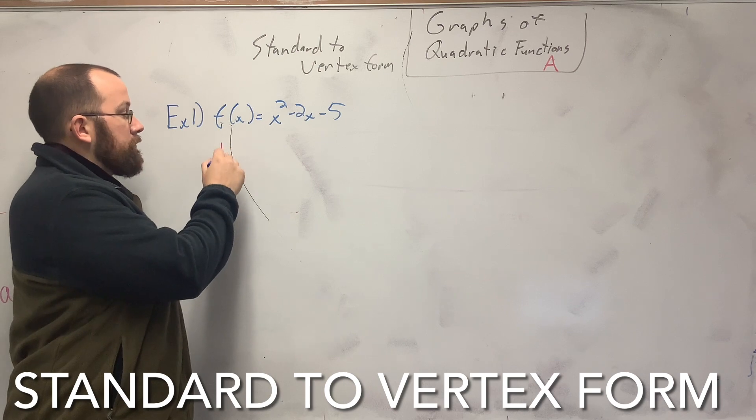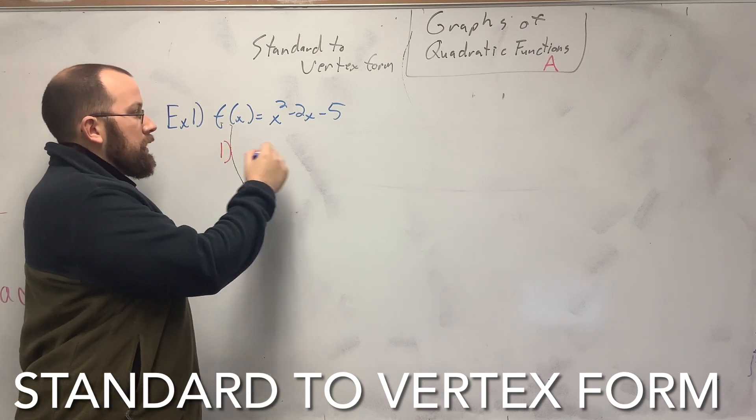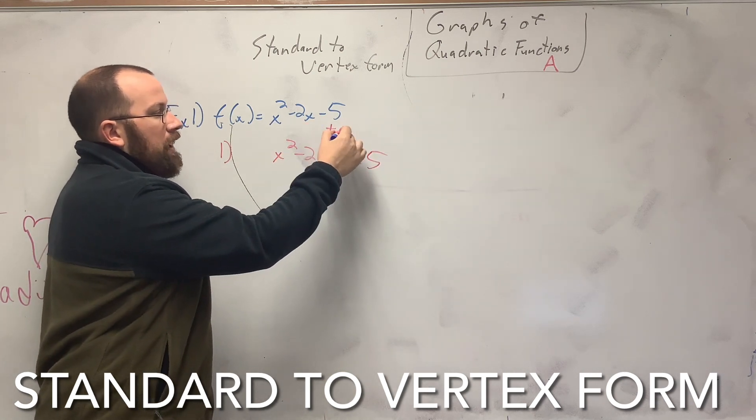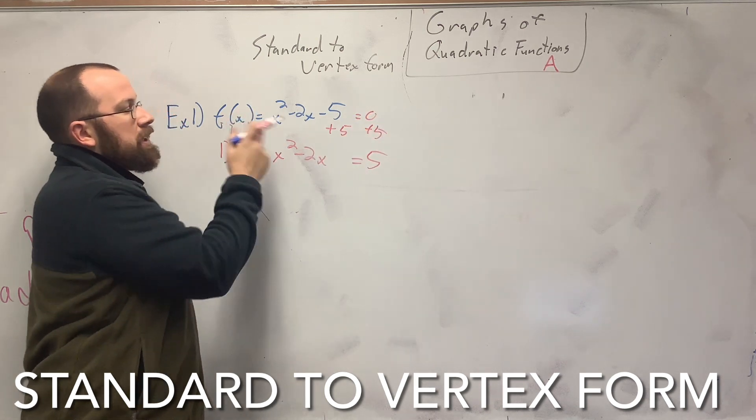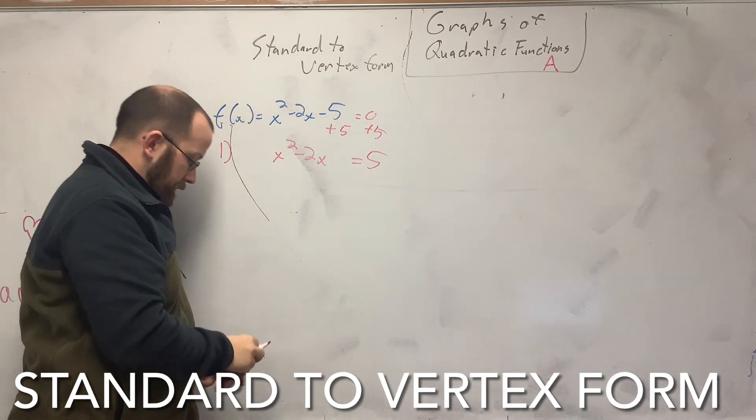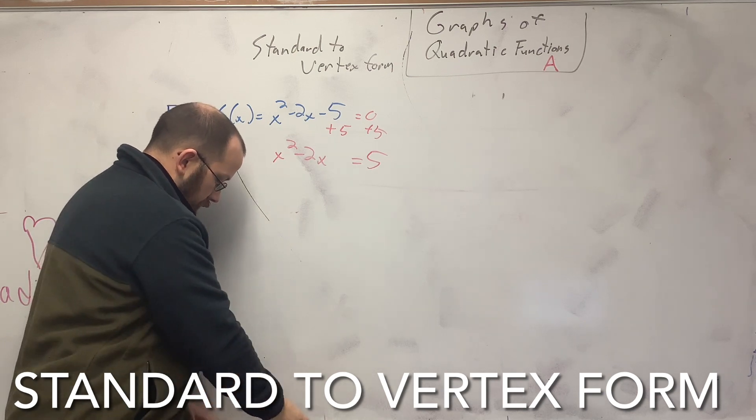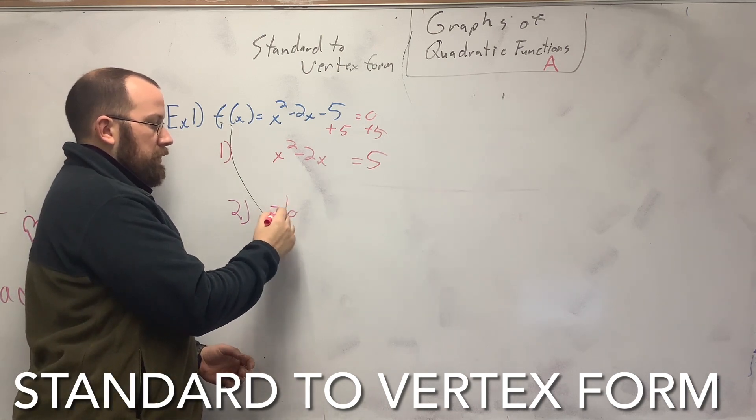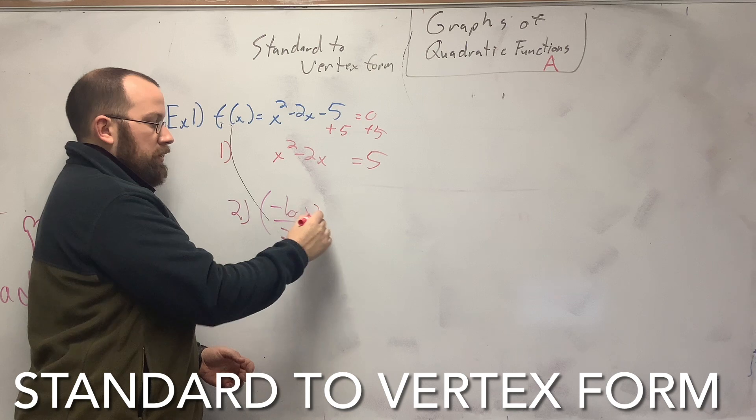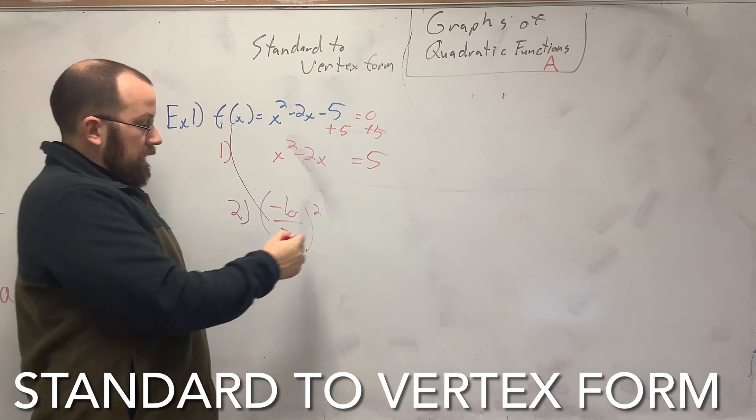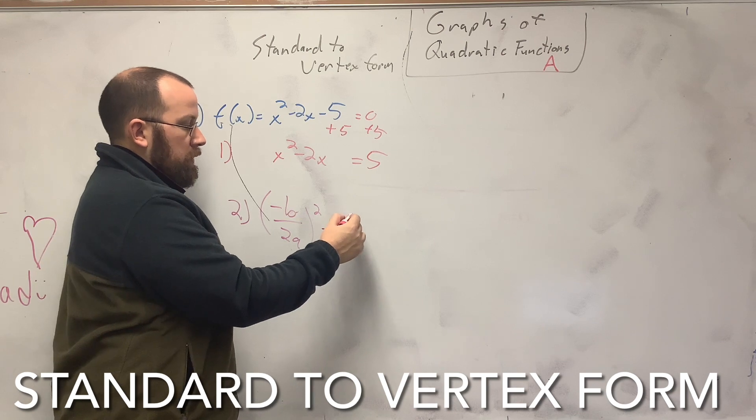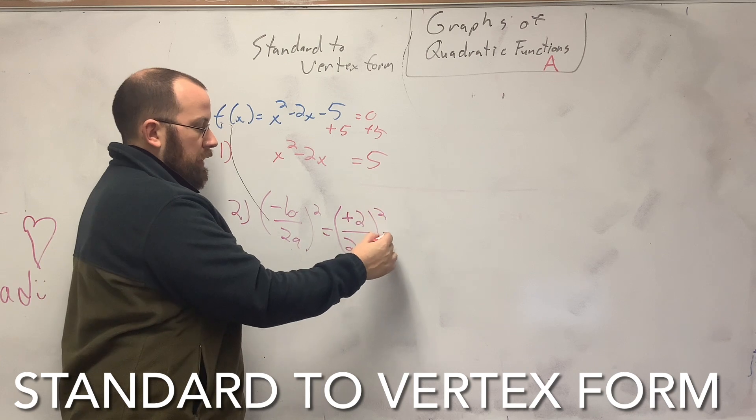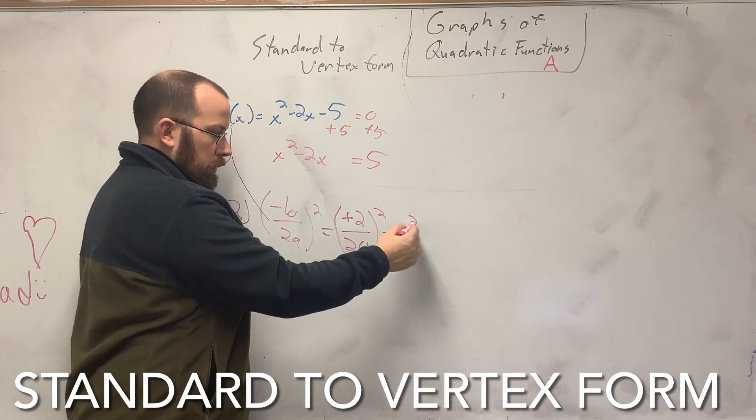So the first step is I'm going to move my 5 to the other side by adding 5. I'm just not going to put the f(x) there. You can if you want, but you don't need to. Second step, you do something different. You do negative b over 2a squared here. So my b is negative 2, which makes this positive 2 over 2 times 1 squared, 1 squared, which is 1.